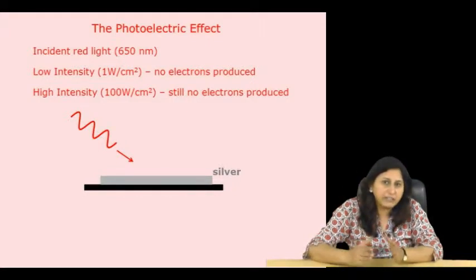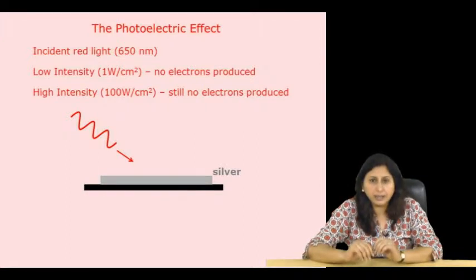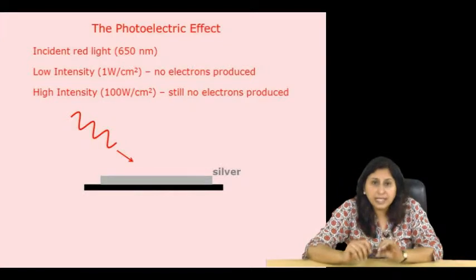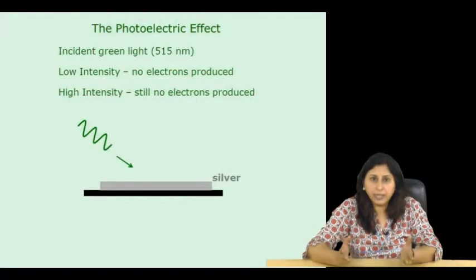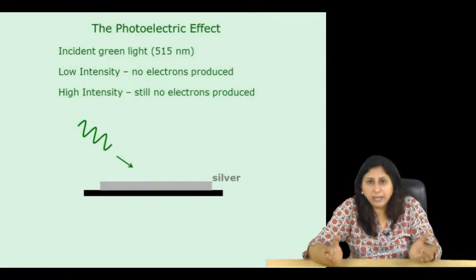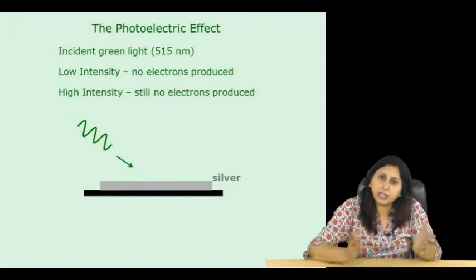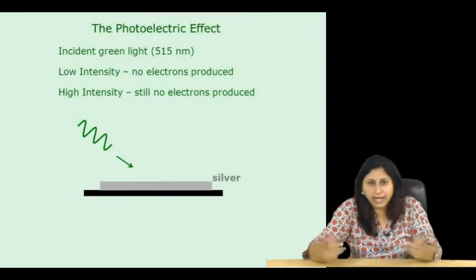Now, we change the wavelength of light to 550 nanometres. This is green light. So, the frequency is now higher but we get nothing in terms of electrons coming out of the metal either at low intensity or at high intensity.